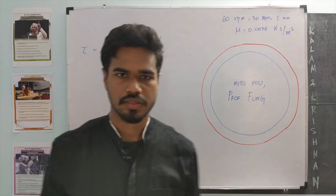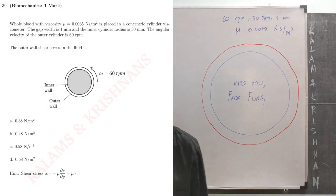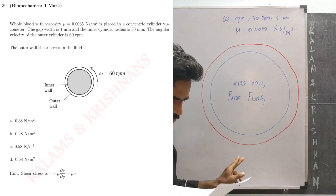So, let me move on to the viscometer problem. Whole blood viscosity mu, it is placed in a concentric cylindrical viscometer. The gap width is 1 mm.